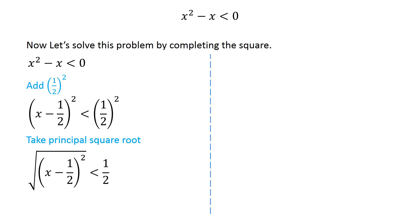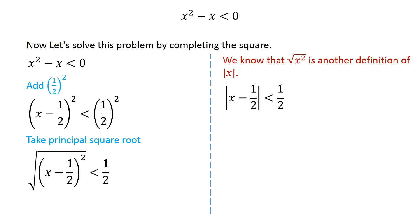Doing so we get: the principal square root of x minus 1 half whole squared is less than 1 half. We know that the principal square root of x squared is another definition of the modulus of x. So we can write this inequality as the modulus of x minus 1 half is less than 1 half.